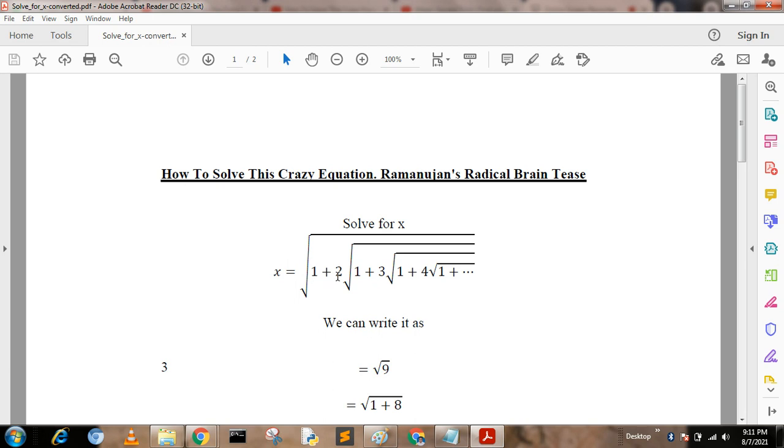1 plus 3 root over 1 plus 4 root over 1 plus dot dot dot. We can solve this problem in the following ways. Before going to start, we can consider x equal to 3. This is a back process. Now I prove the equations.